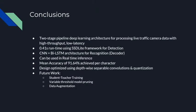In conclusion, we implemented a two-stage pipeline deep learning architecture for processing live traffic camera data with high throughput and low latency, making inference for a single sample in 0.41 seconds, enabling real-time implementation. The recognition decoder is based on a hybrid architecture combining convolutional neural networks and bidirectional LSTM layers, achieving 91.64% mean accuracy per character. We optimized the design using depthwise separable convolutions and quantization, greatly reducing model size and operations. Future work includes exploring student-teacher training, variable threshold-based model pruning, and data augmentation for more robust training.